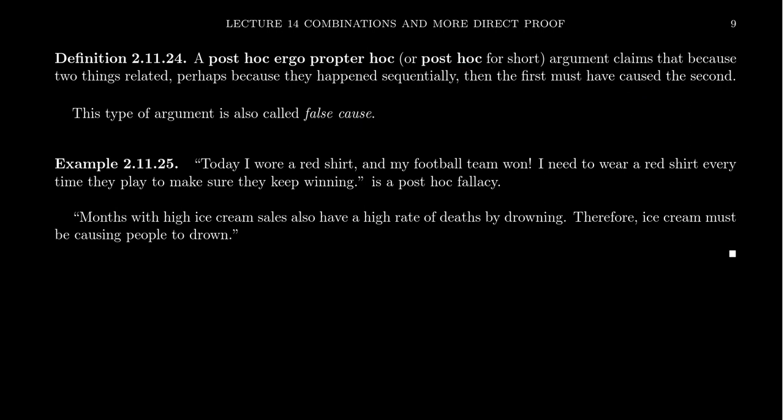An example of this would be something like the following. Today, I wore a red shirt and my football team won. I need to wear a red shirt every time they play to make sure they keep on winning. This type of superstition is a post hoc argument. The idea is you're supposing that, well, I wore a shirt and then they won. You're supposing that there's some type of cause, some kind of causality relationship between the red shirt and the winning. And perhaps because there was another time where you didn't wear a red shirt and they lost.